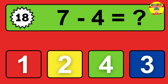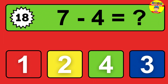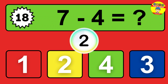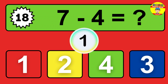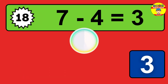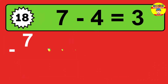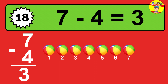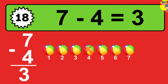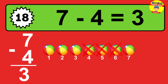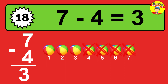Question 18. 7 minus 4 equals what? So the answer is 7 minus 4 is 3. Let's count it. 1, 2, 3.